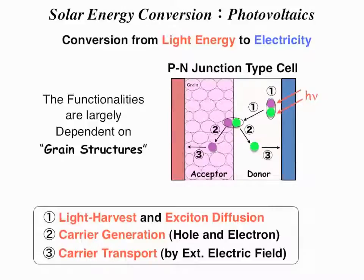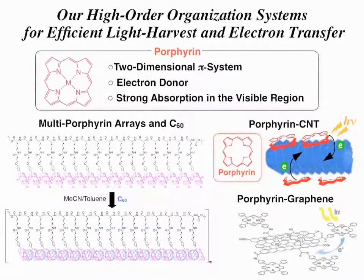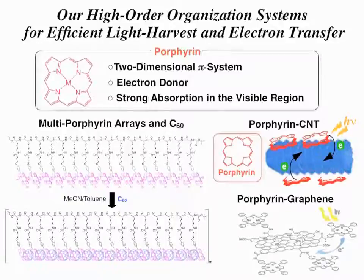Grain structures mean the assembly of dye molecules. On the other hand, porphyrin has an extensively conjugated two-dimensional pi system. Therefore, this molecule is a good electron donor as well as a sensitizer.